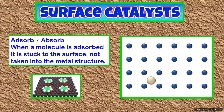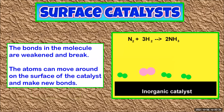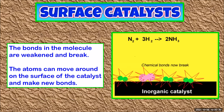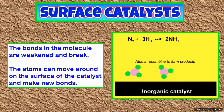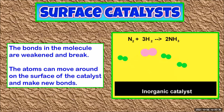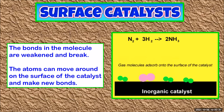Once adsorbed, the bonds can break easily and the atoms are able to move around on the surface. Here we're looking at the Haber process — the reaction of nitrogen and hydrogen to make ammonia. The nitrogen and hydrogen are adsorbed onto the catalyst, the bonds break, and the nitrogen and hydrogen atoms recombine on the surface to produce ammonia.